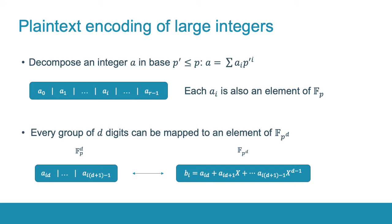Then, every group of d digits can be mapped to an element of the finite field Fp^d. And this means that we can convert the decomposition vector of A in base p to the vector of elements over Fp^d. Note that this conversion is invertible.